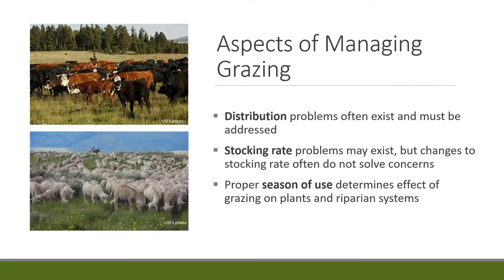To manage grazing along streams and hasten recovery, remember that the issue with livestock in streams is largely a distribution problem. Stocking rate may not be the problem — sometimes animals are attracted to the stream, which combined with stocking rate creates the issue. You can reduce stocking rate and that may not solve the problem if the real issue is distribution. Another management aspect to keep track of is the season of grazing.